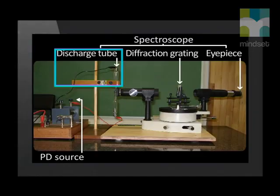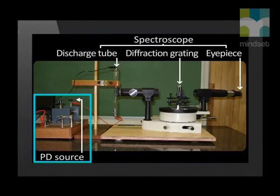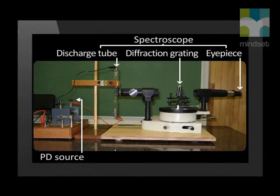We need to put our mystery gas in a glass discharge tube, which has a metal plate at each end. The tube is held by a retort stand. Next to the tube we have an electrical power source — a PD source — which provides a potential difference. We connect one metal plate to the positive terminal and the other to the negative terminal. This creates a potential difference across the gas in the tube, making the gas glow, which is best noticed in a dark room.